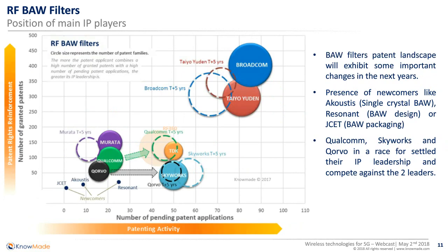However, looking at the BAW filter technology, which addresses higher frequencies for filtering operations, the landscape is very different — with many changes expected in the next year. Two main IP leaders, Broadcom and Taiudan, have led the IP landscape for a couple of years, but their patenting activity is slightly decreasing and their position is struggling. Very interesting is the presence of newcomers like Acoustis, Resonant, or GSET that have entered the IP landscape in the last eight years — something the SAW filter landscape does not have.